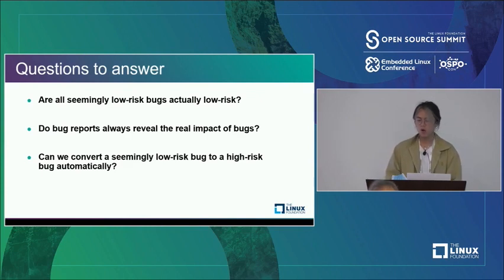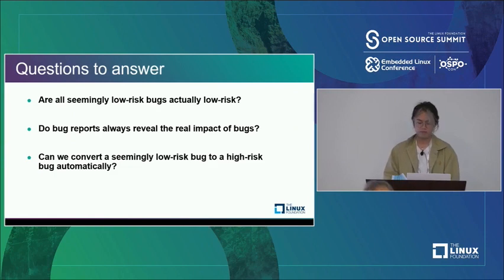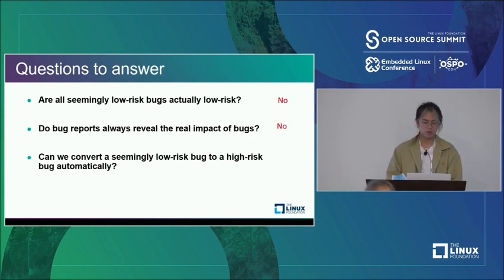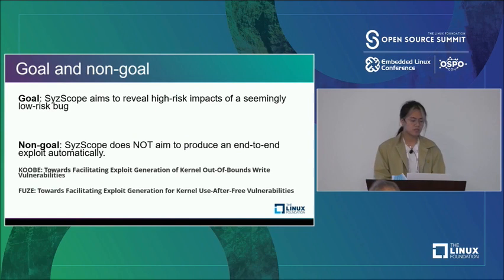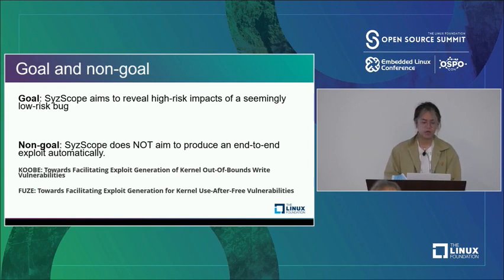So what specific problems does Syscope want to solve? We prepared three questions. Are all seemingly low-risk bugs actually low-risk? Do bug reports always reveal the real impact of bugs? Interestingly, in our research, the answer to both turns out to be no. Can we automatically convert a seemingly low-risk bug to a high-risk bug? Yes, we can convert some low-risk bugs to high-risk bugs, and even automatically. The original bug reports from SysBot or other conventional kernel fuzzers are sometimes incorrect or misleading.